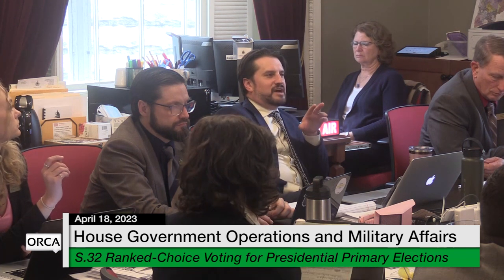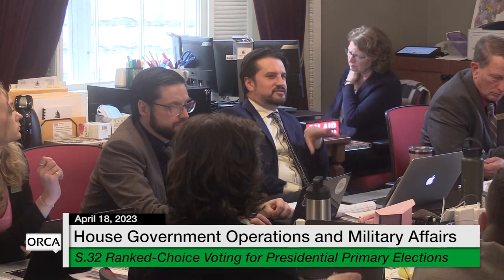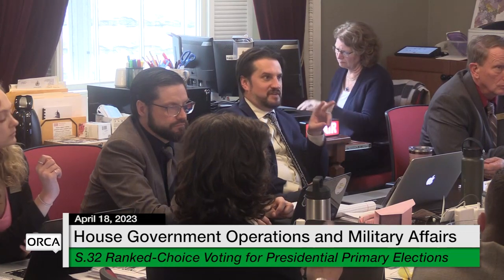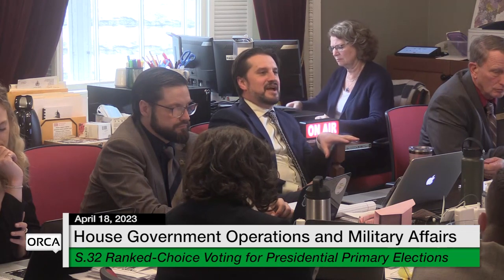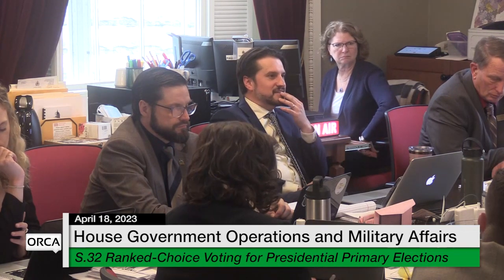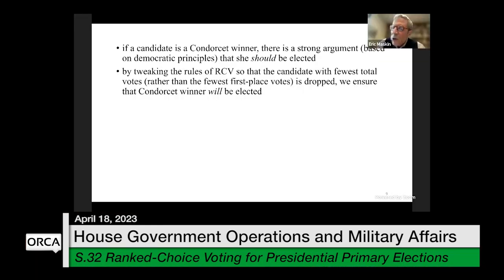Isn't it also extremely rare that the instant runoff winner and the Condorcet winner would be different outcomes? We have a real example from Burlington, Vermont in 2009, but that's the extreme outlier, is it not? It depends what you mean by extreme outlier. We have analyzed data from Australia, and actually in about 6 or 7% of cases there, the Condorcet winner and the ordinary ranked choice vote winner were not the same. So 6 or 7% is not every day, but it's not an extreme outlier either.